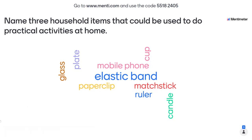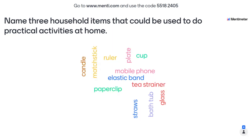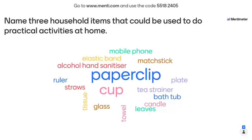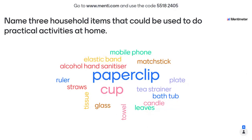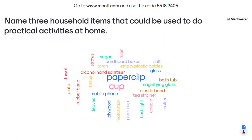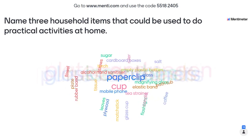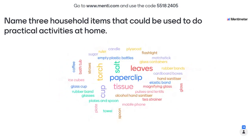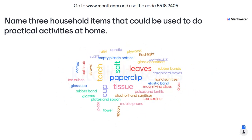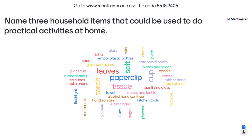Candles are a good one - we'll definitely be talking about that. A ruler we have at home and at school. A tea strainer - that's a fun one. Bathtub, leaves, towel, tissue, straws - lots of stuff. Hand sanitizer is a nice new one. Torches are good as well, and cardboard boxes - we almost always can find a cardboard box to do something in science.